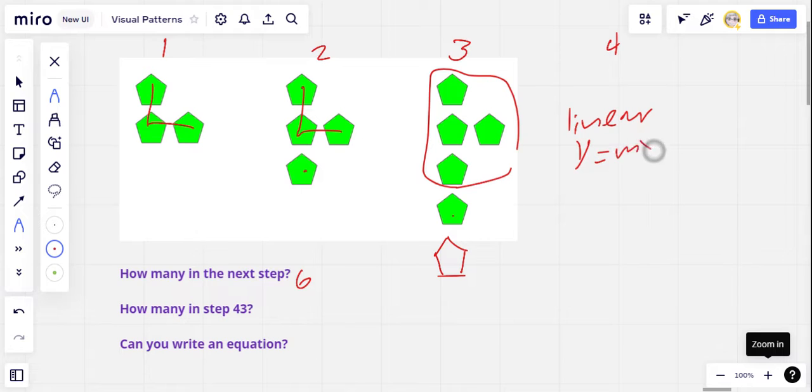Then you can use this equation, y equals mx plus b, to model that pattern. And I think this grows by the same amount each step. We add one, we add one, we add one.